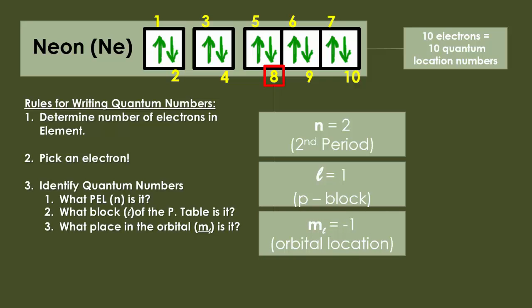The rules for writing quantum numbers: determine the number of electrons in the element using orbital notation from previous videos. We have 10 electrons in this case. We're going to pick the eighth one, which is the down arrow here. Identify the quantum numbers. What is the principal energy level of that electron? It's the second one, so n equals 2. What block of the periodic table is it in? It's in the p sublevel, so l equals 1. What place in the orbital is it? It's left of center, so we get negative 1 for m_l. Finally, is it an up or down arrow? It's a down arrow, so we get negative one-half for m_s. That specific electron has quantum numbers 2, 1, negative 1, negative one-half.